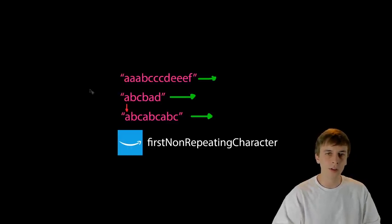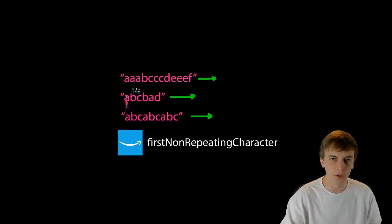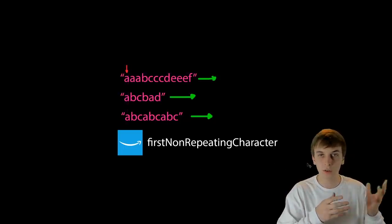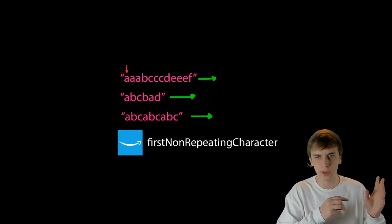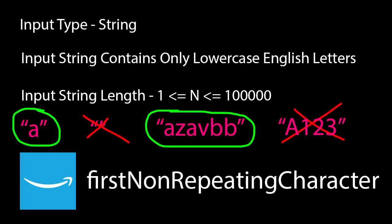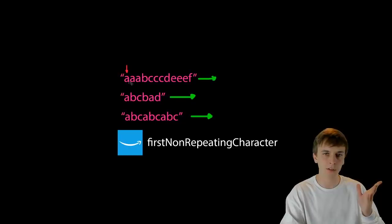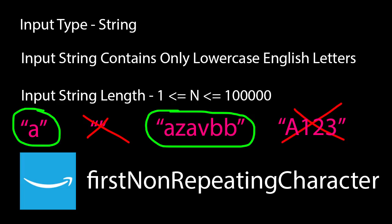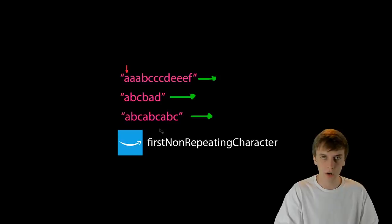Instead of reading the confusing problem description, I'll just explain it. We're going to solve a function called 'first non-repeating character.' Our input is one string — only lowercase English letters, no numbers or special characters, so letters a through z. It's going to be at least one character and could be up to about a hundred thousand characters.